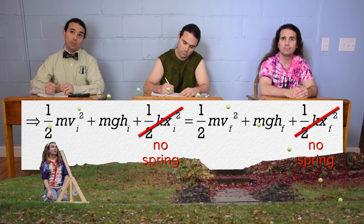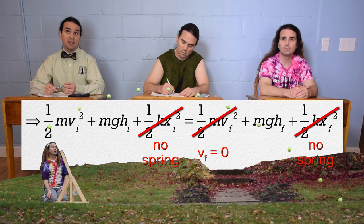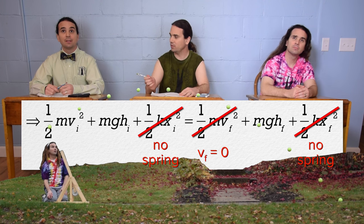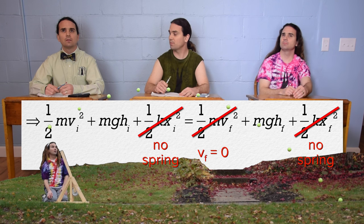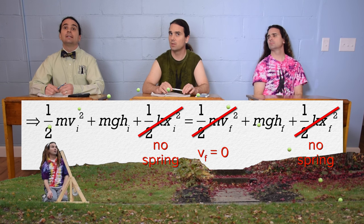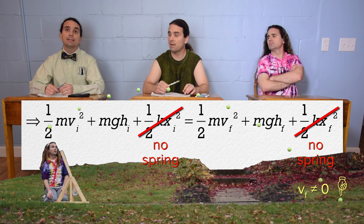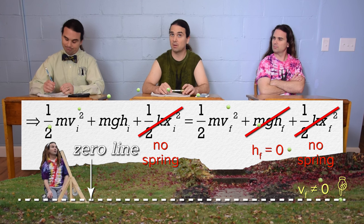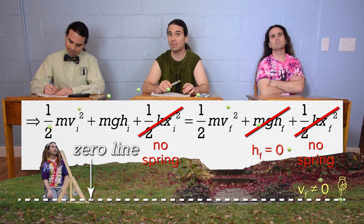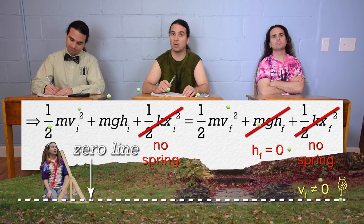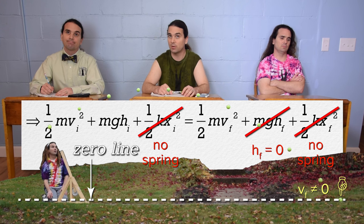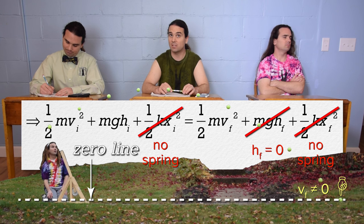Billy, what else? There is no kinetic energy final because the ball stops when it strikes the ground. Actually, the final point is right before the ball strikes the ground, so the final velocity is not zero. The final vertical height above the horizontal zero line, however, is zero because the ball is at the horizontal zero line at that final point. So the final gravitational potential energy is zero.